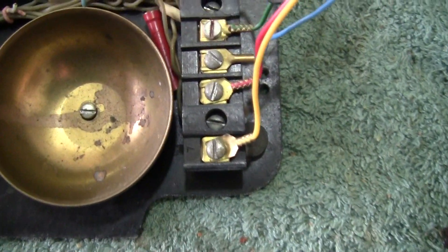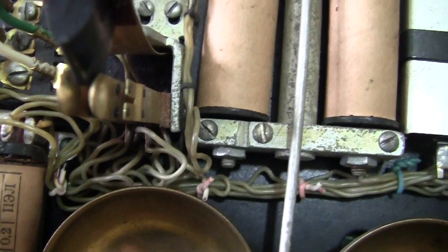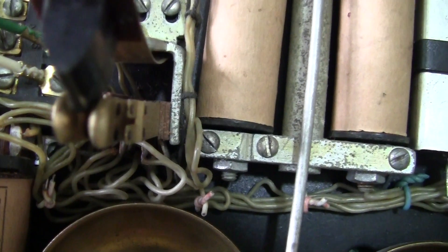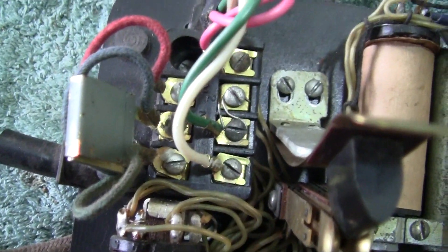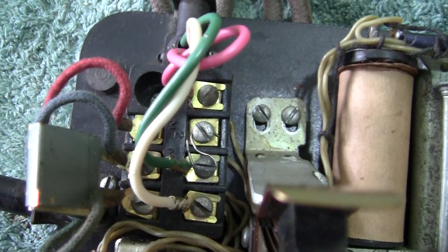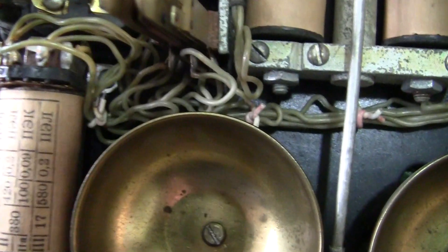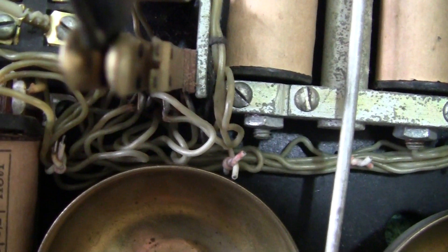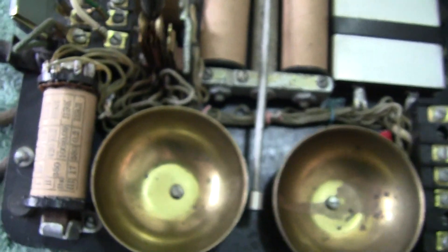That more or less is it. The terminations there are for the line cord and you can see the wires that are used. It's actually red - yeah, red, green, and white. That's what is on the actual phone itself.